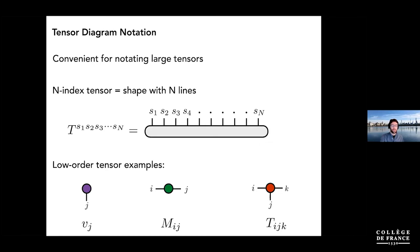Let me briefly introduce the tensor network notation introduced by Roger Penrose, which is extremely useful for notating very large tensors. If you think about a tensor with two indices as a matrix, and three as a cube of numbers, with four indices you can't even really draw that — so a different notation is helpful.